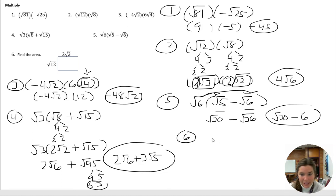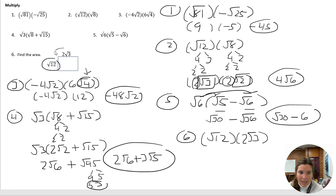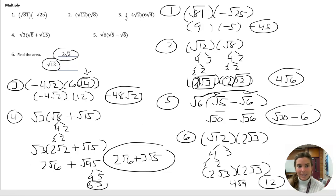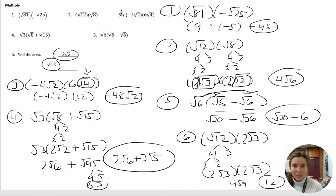Okay, number six: we have square root of 12 times two square roots of three. Remember when you do area, it's just length times width. Square root of 12 simplifies to four and three — two and two — so that simplifies to two root three. Then we have times two root three. Two times two is four, root three times root three is root nine, square root of nine is really just three, and three times four is twelve. Okay, go ahead and come back and grab the extra practice for the multiplying section if you need that.